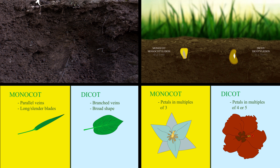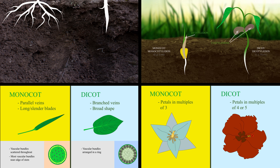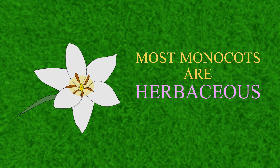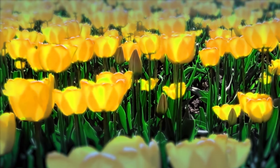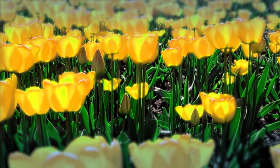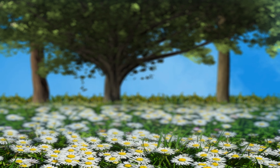In summary, monocots and dicots differ structurally in terms of their leaves, stems, flowers, and roots. But there is one last thing you should note: most monocots are herbaceous, meaning that they have no persistent woody stem. Instead, they tend to have a flexible green stem, grow quickly, and produce lots of seeds in a short period of time. There are many more varieties of dicots compared to monocots, because the possibility of a woody support system in their roots and stems allows them to grow to all shapes and sizes, from trees to daisies.